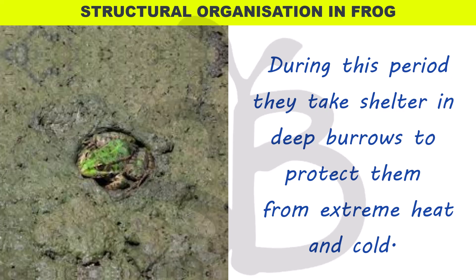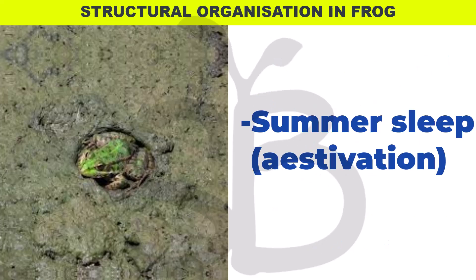During extreme summer or extreme cold conditions, frogs go into a deep sleep state called estivation or hibernation respectively. In this state, they conserve and save energy to survive the extreme climate conditions.